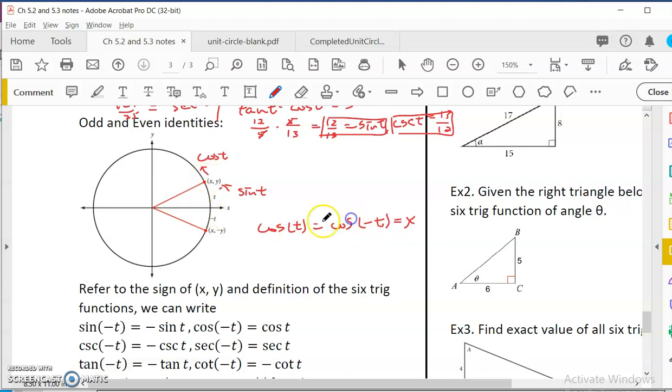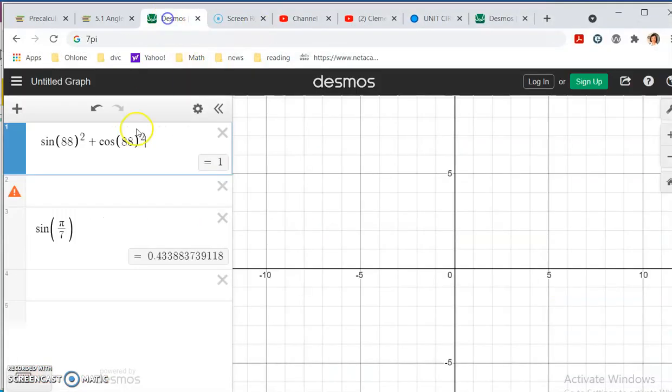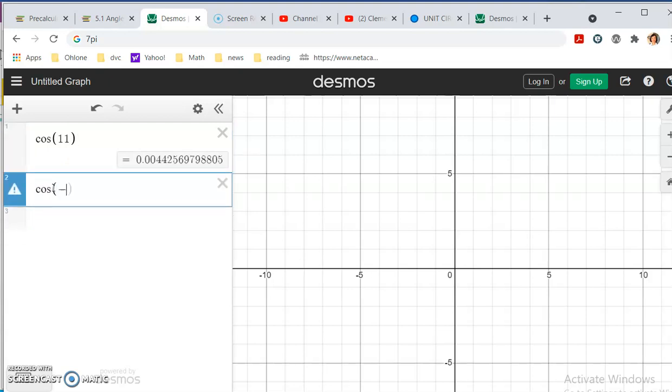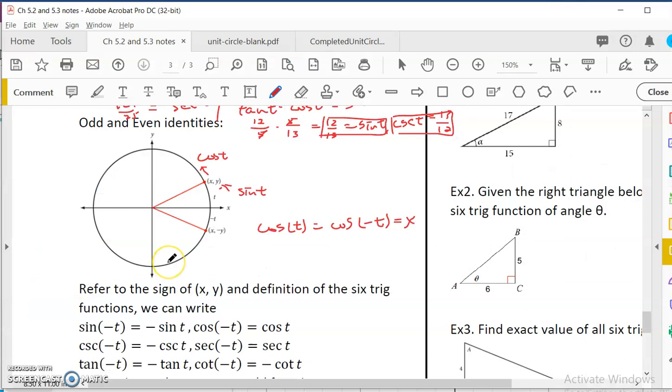So for cosine, if you input a positive or negative of the same number, you get the same answer. So we can actually investigate it here. So if I say cosine 1, okay? So if I say cosine negative 1, well, it's the same. If I say cosine 1.2, cosine negative 1.2, exactly the same thing, right? So what do we call this kind of function where f of x equal to f of negative x, that's even function. So cosine is even. This is valid for any t.